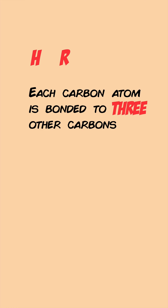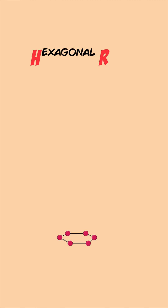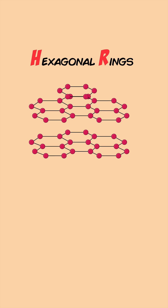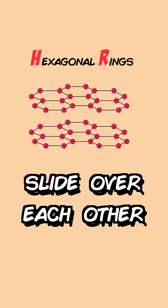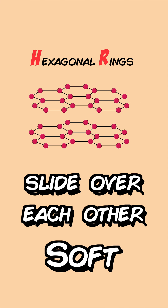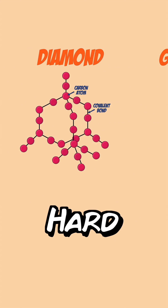The H and R in graphite can also remind you that it exists as hexagonal rings, which can slide over each other. This makes graphite soft, whereas diamond is hard.